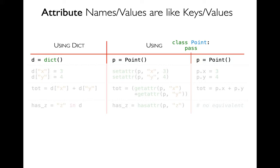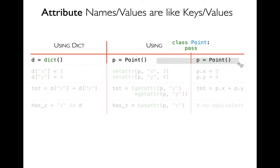Let me hammer on this analogy between objects created from classes and dictionary objects by showing code that's parallel between these approaches. In each case, I'm trying to create point objects — points on a two-dimensional space, so each point should have an x-coordinate and a y-coordinate. On the left example, I'm saying d equals a new object of type dictionary. On the right, I have a class Point, and I'm going to show two different ways to use that.